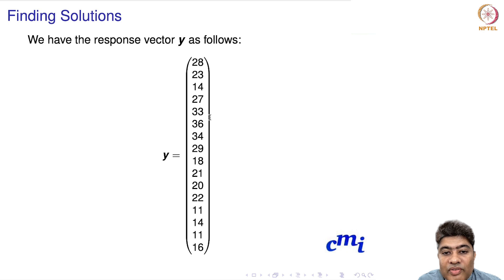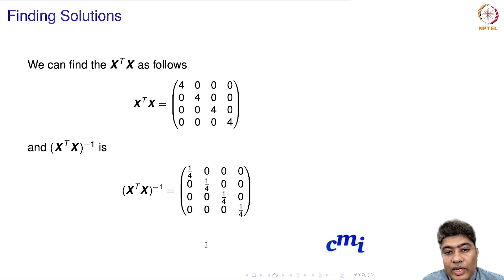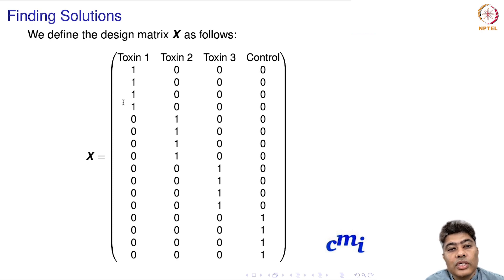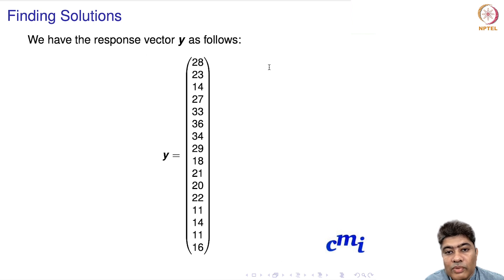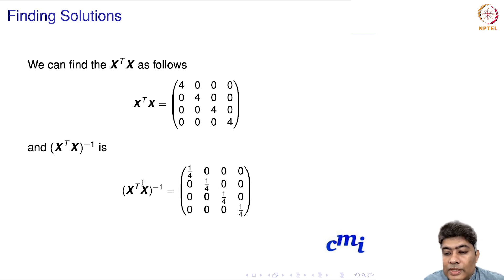Observation numbers 5 to 8 belong to Toxin Group 2, rows 8 to 12 belong to Toxin Group 3, and rows 13 to 16 belong to the control group. Then we calculate X'X. It turns out X'X becomes very simple — the diagonal elements are 4 and the off-diagonals are 0. So X'X inverse is also simple: diagonal elements are 1/4 and off-diagonals are zero.